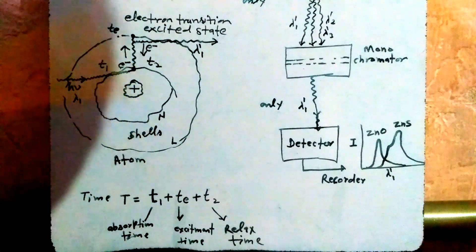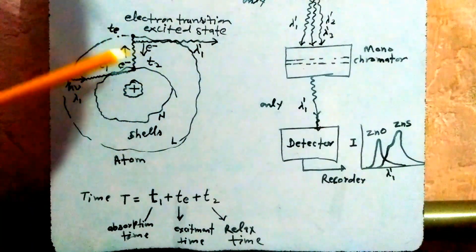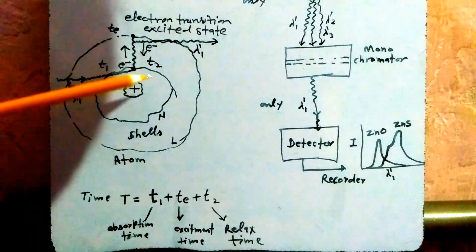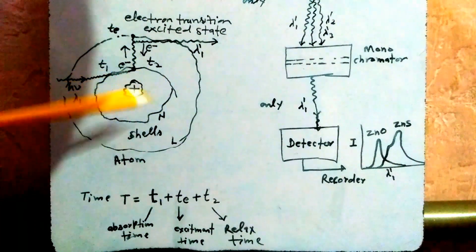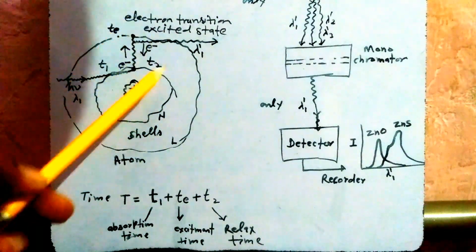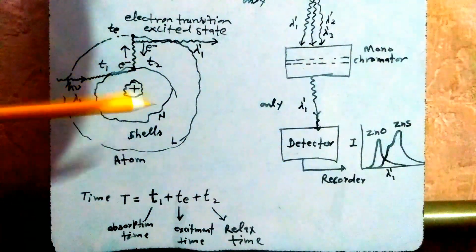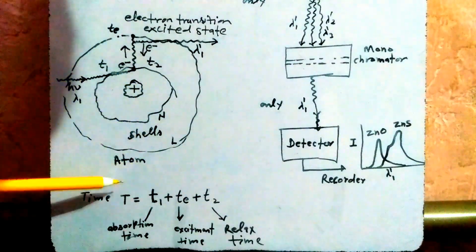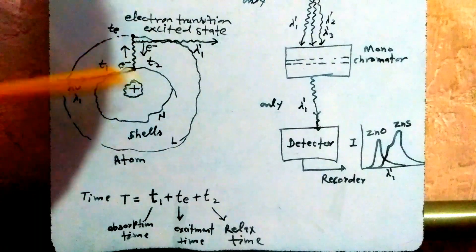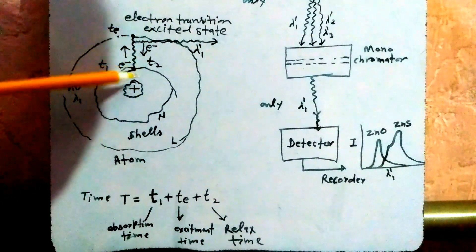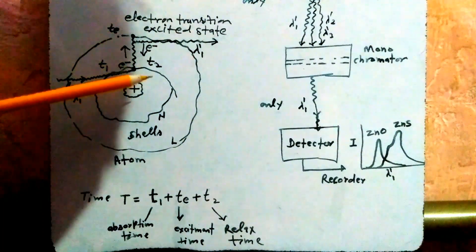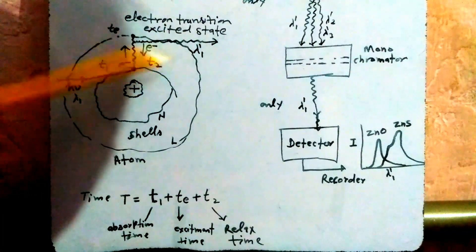The re-emitted spectrum is further filtered again by the monochromator, and we receive monochromatic light which is detected and the recorded graph is analyzed. This represents the atom where the electron is excited, moves to a higher shell, and then returns to the ground state energy level, emitting the spectrum.